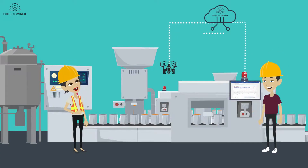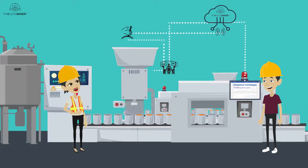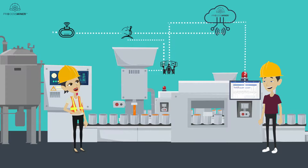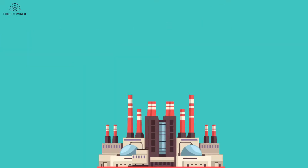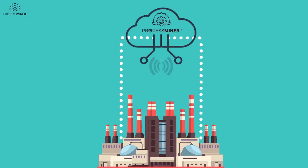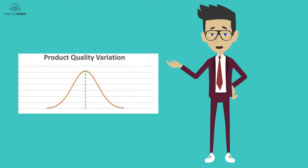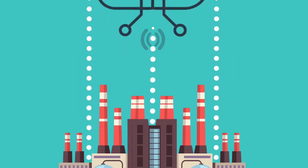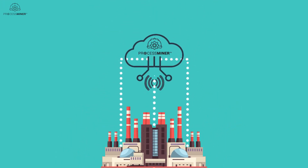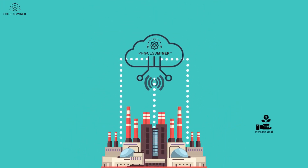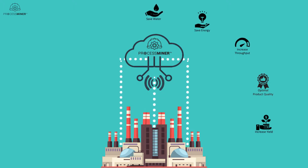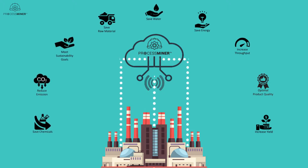To assist the operators and apply the recommendations in real-time and achieve the optimal results, Process Miner's Autopilot closes the process control loop autonomously, utilizing IIoT technology. Process Miner's Autopilot provides real-time precision control optimization capability to the manufacturing process. This will result in timely reduction of process variability and increased process stability. It will assist manufacturers to achieve optimal product quality while increasing yield and throughput, reducing the consumption of raw materials, chemicals, water, and energy, reducing emissions, and meeting their sustainability goals.